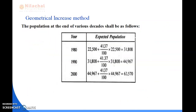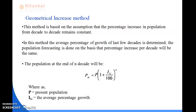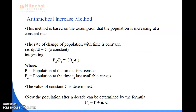First, we'll review the arithmetical increasing method. This method is mainly based on the assumption that the population is increasing at a constant rate. We derived the formula: Pn = P + n × C, where Pn is the population after n decades, P is the present population, n is the number of decades, and C is the constant.